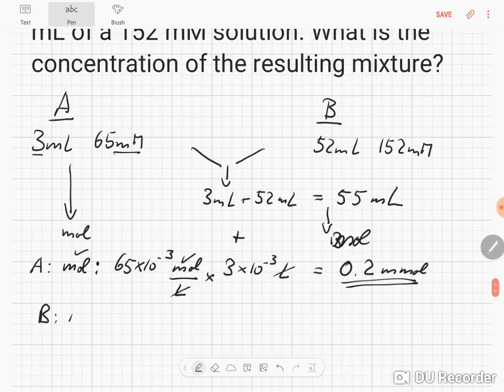We do that for solution B. We have 152 times 10 to the minus 3 mole per liter times 52 times 10 to the minus 3 liter. Again the liter cancel out and we get everything in mole, roughly 7.96 millimole.